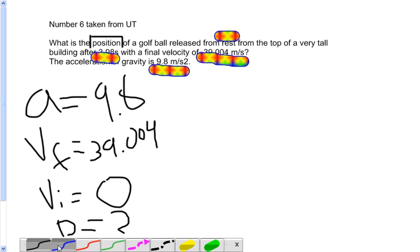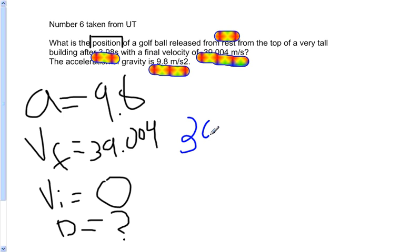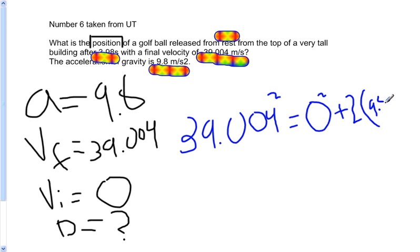Let's use a different color. Okay, so the final velocity, which is 39.004 squared equals 0 squared plus 2 times 9.8 times d, which is unknown. That is a d.